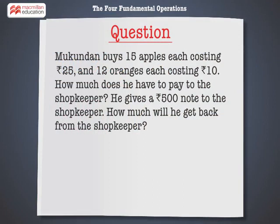Mukundan buys 15 apples each costing rupees 25 and 12 oranges each costing rupees 10. How much does he have to pay to the shopkeeper? He gives a rupees 500 note to the shopkeeper. How much will he get back from the shopkeeper?